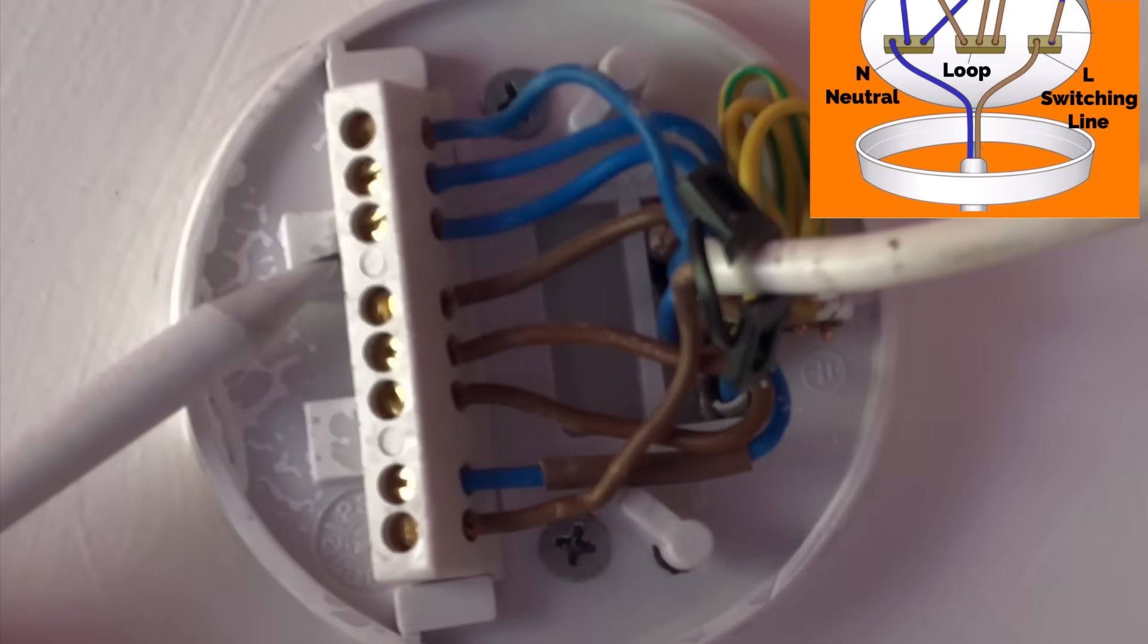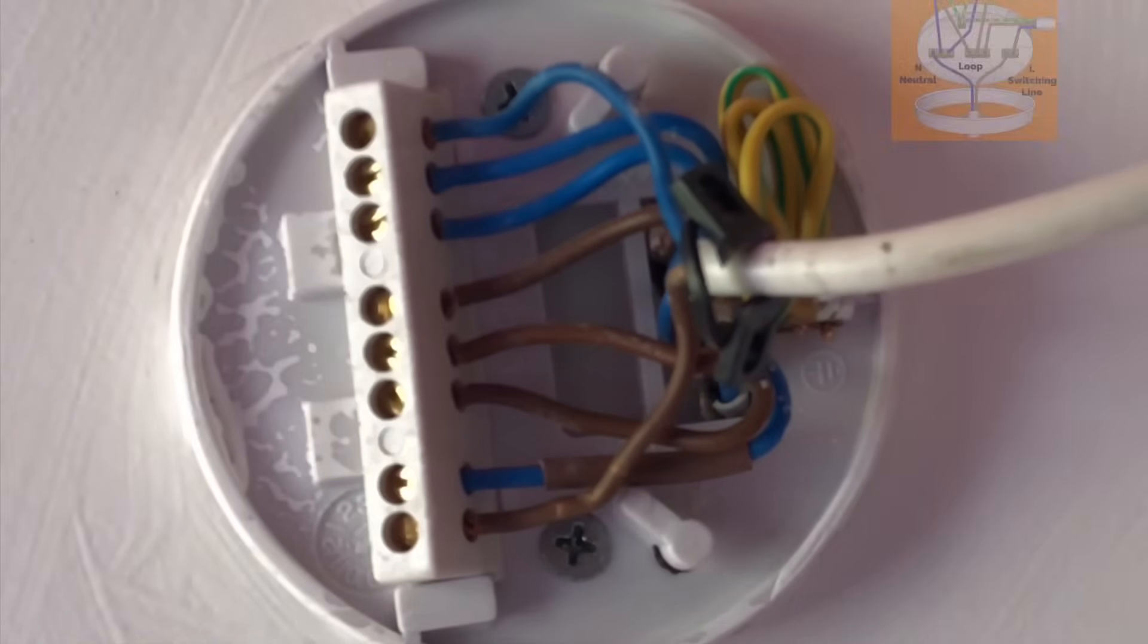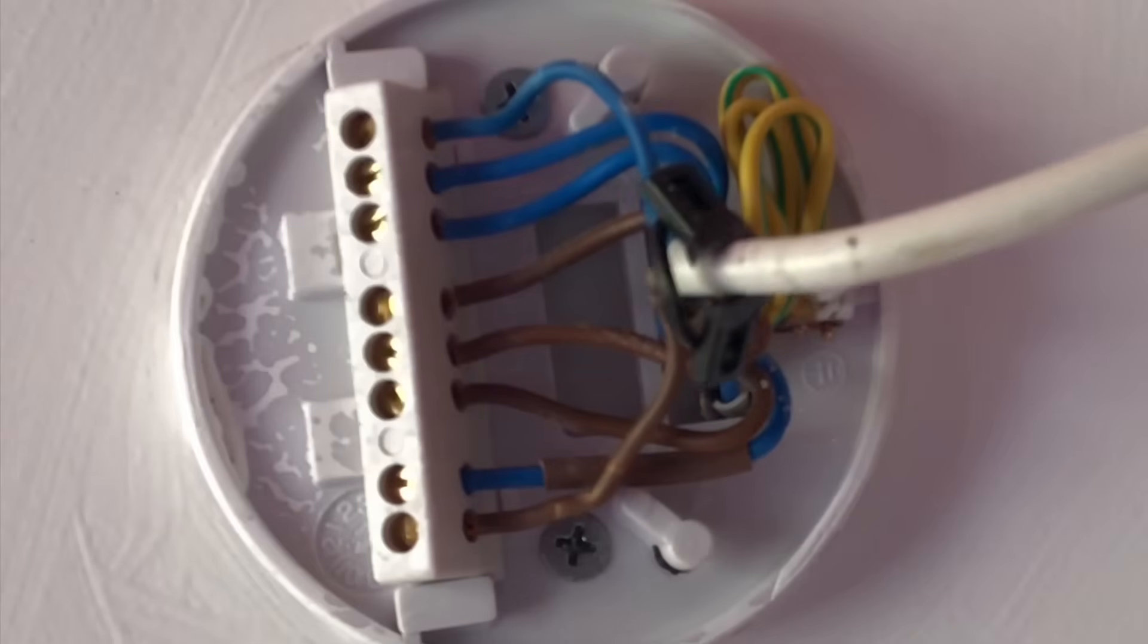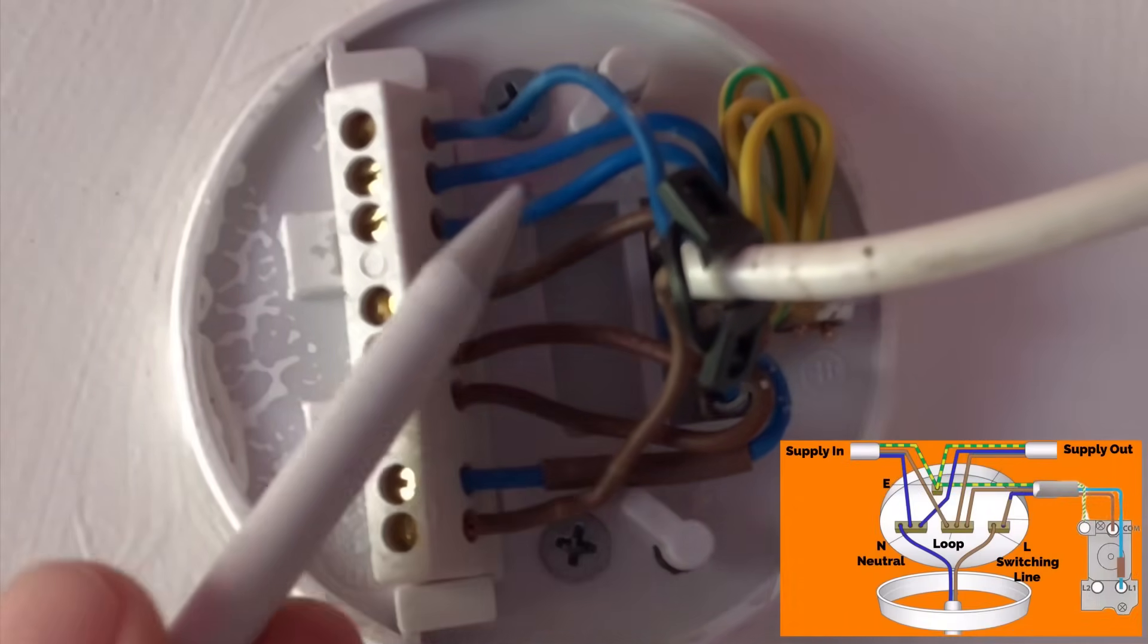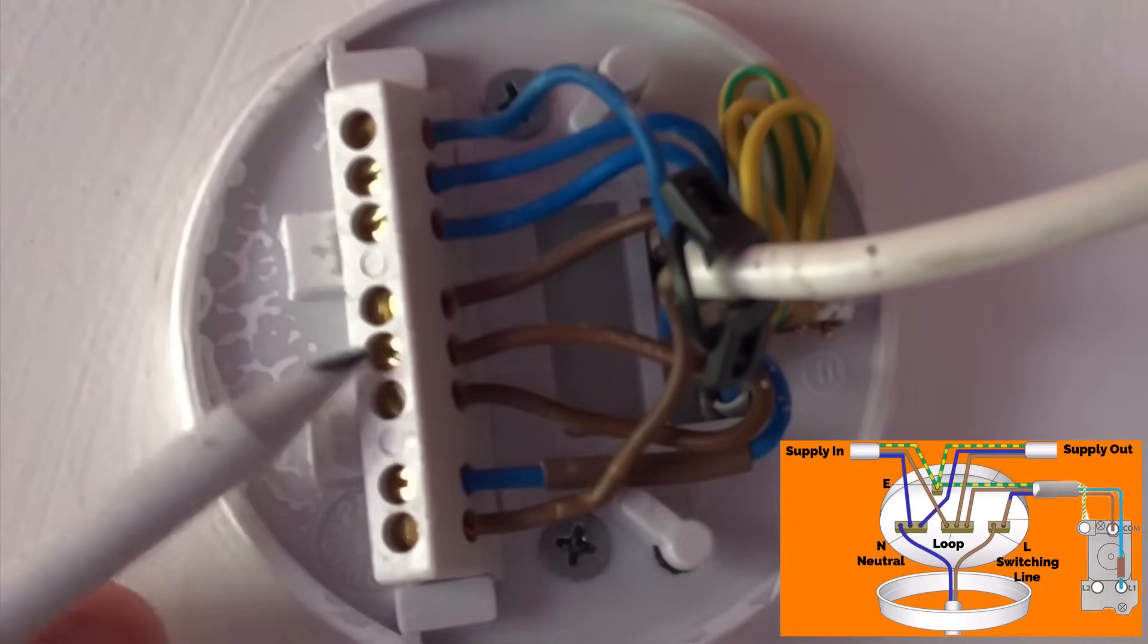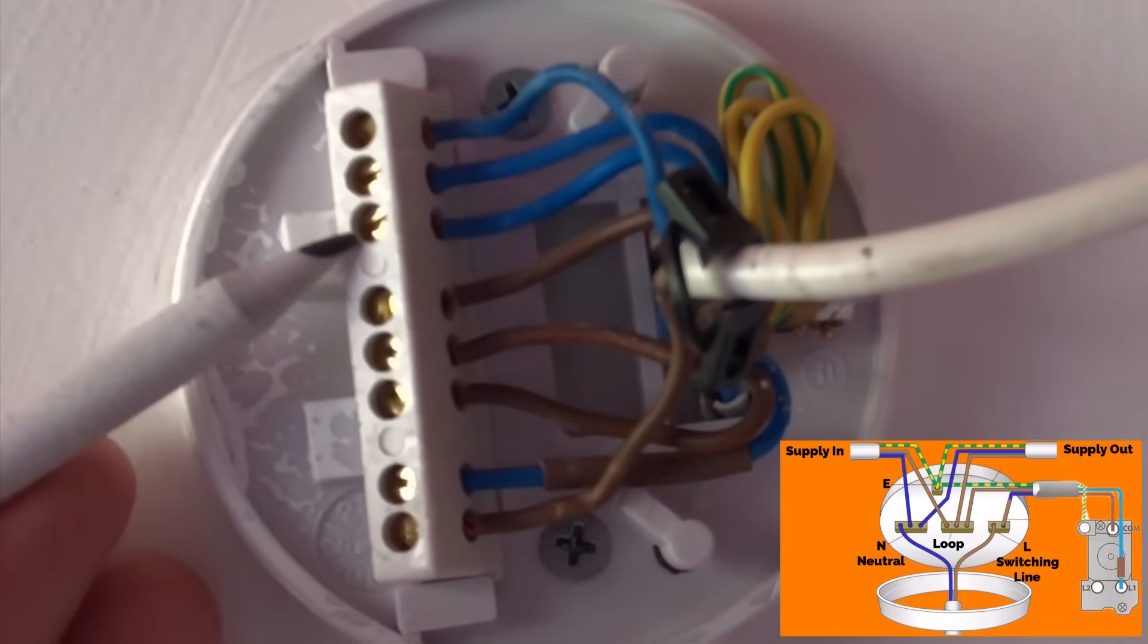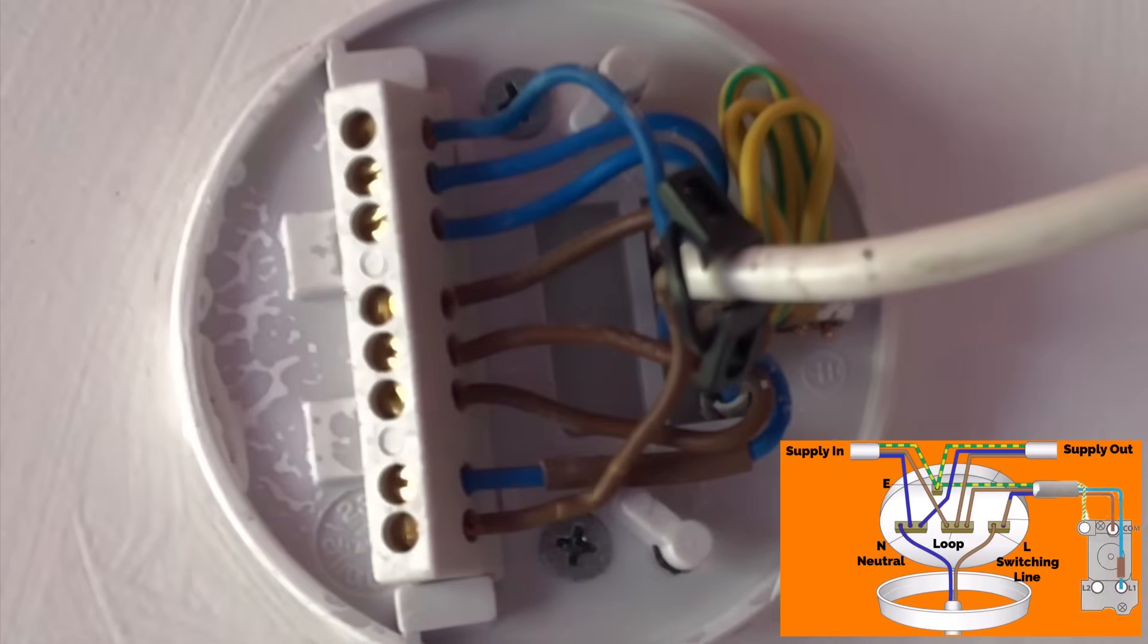So we've got three twin and CPC cables. We've got the supply coming in, so let's say this one here, this brown conductor here and this blue neutral here, would bring a permanent line in and the neutral connection into this ceiling rose. The permanent line is connected in the loop section here and the neutral in this block of three classed as neutral.